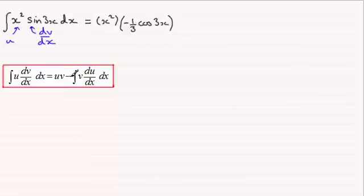And that's going to be minus 1 third cosine of 3x. And then it's minus the integral of v. So we've got v here. So just copy that bracket back down again. So it's minus 1 third then cosine of 3x. And we multiply this by du dx. So we differentiate u with respect to x. So u is x squared, and so that gives us 2x. And then put dx on the end. We're integrating with respect to x.